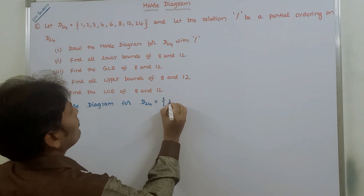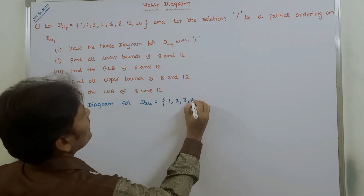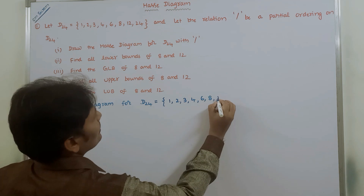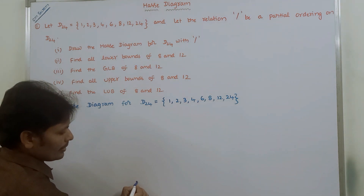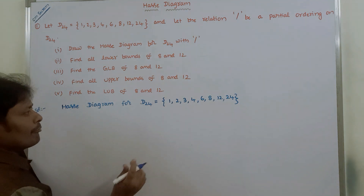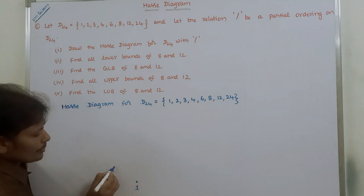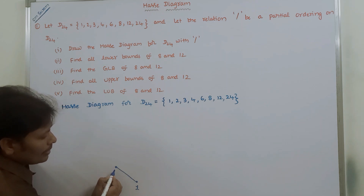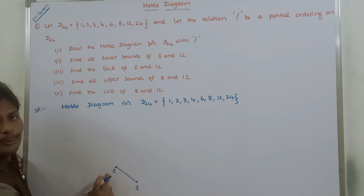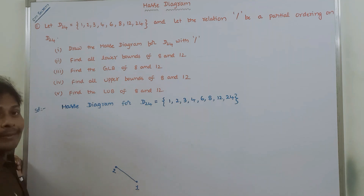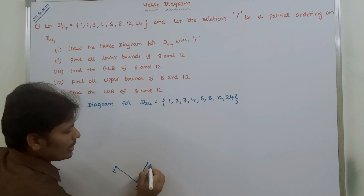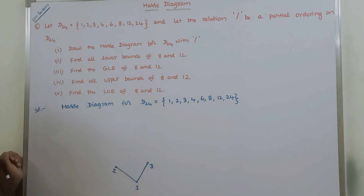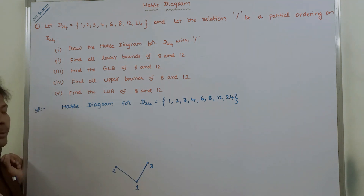D24 contains 1, 2, 3, 4, 6, 8, 12, and 24. Starting with element 1: 1 divides 2, so we draw an edge between 1 and 2. Next, 1 divides 3, so we draw an edge between 1 and 3. 2 does not divide 3, therefore we do not draw an edge between 2 and 3.